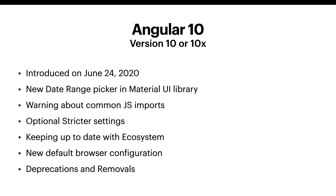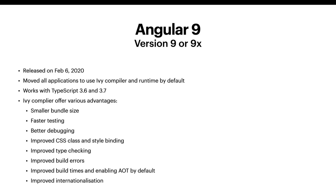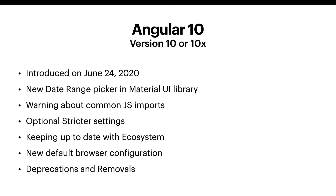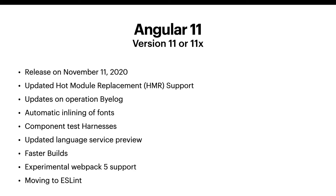After Angular 9, Google introduced Angular 10 on June 24, 2020 — just a few months after Angular 9. Improvements included a new date range picker in the Material UI library, warnings about CommonJS imports, optional stricter settings, mechanisms to keep up to date with the ecosystem, new default browser configuration, and deprecations and removals of features that were no longer commonly used.